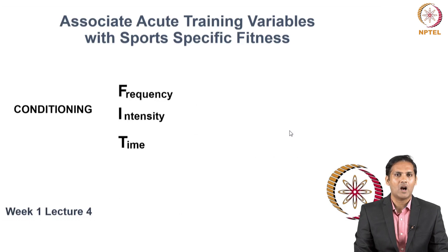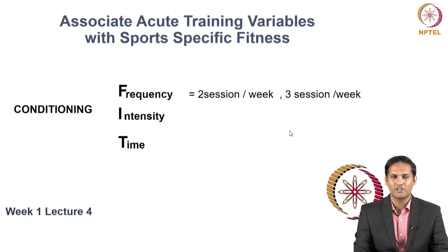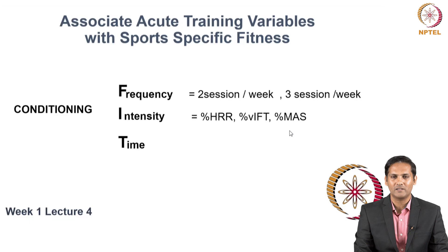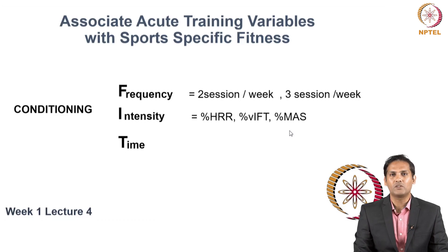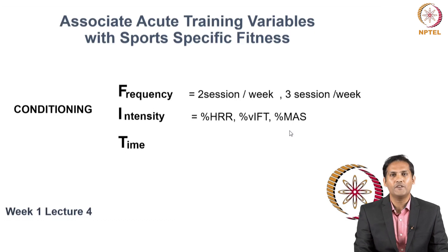Now let's see how you write FIDTVP for conditioning. Frequency is 2 or 3 conditioning sessions per week. Intensity can be written as percent of HRR, percent of vIFT (where V stands for velocity and IFT stands for intermittent fitness training), or percent of maximal aerobic speed. These are the different types of intensity you can use when prescribing a conditioning program or conditioning drills.